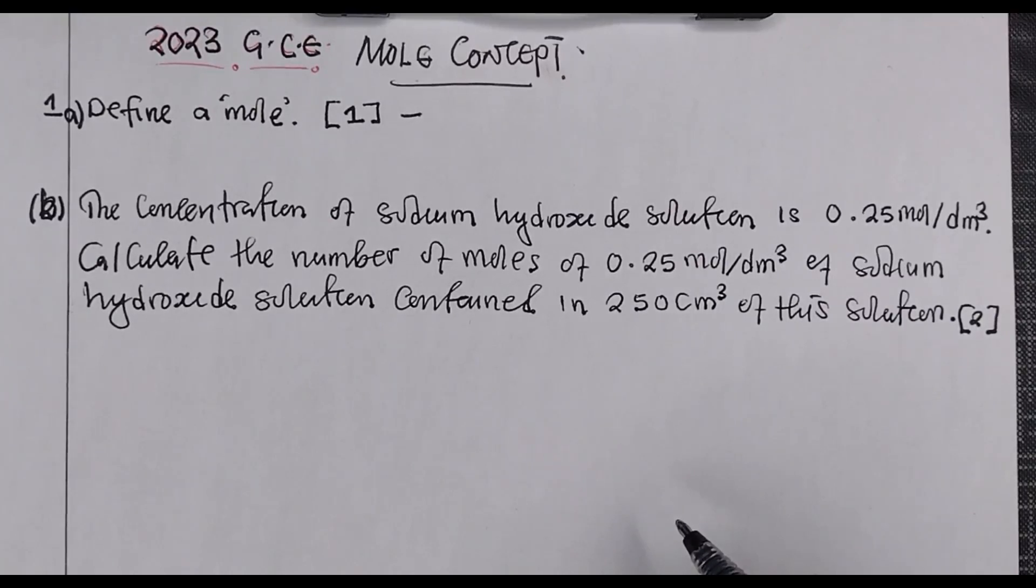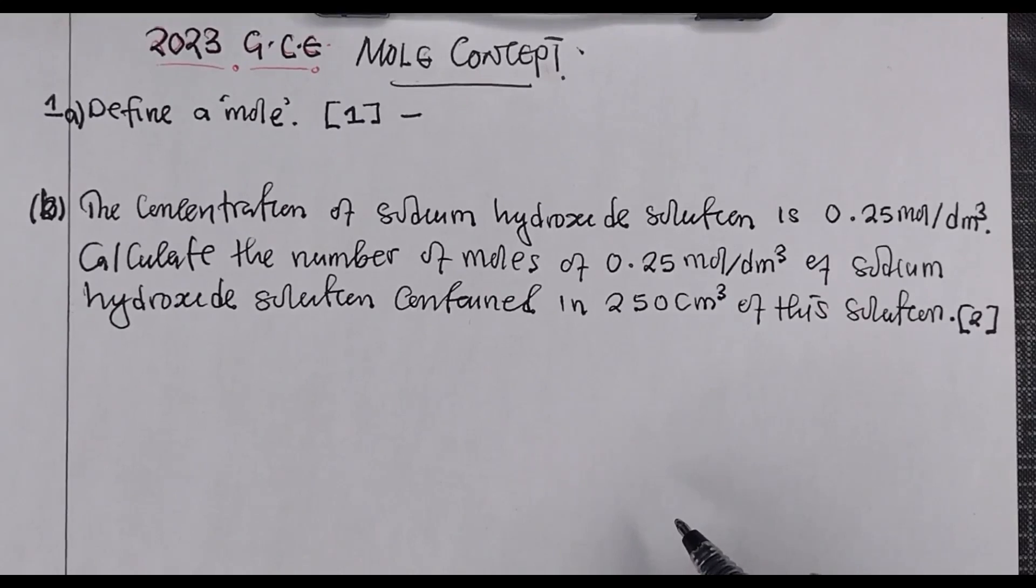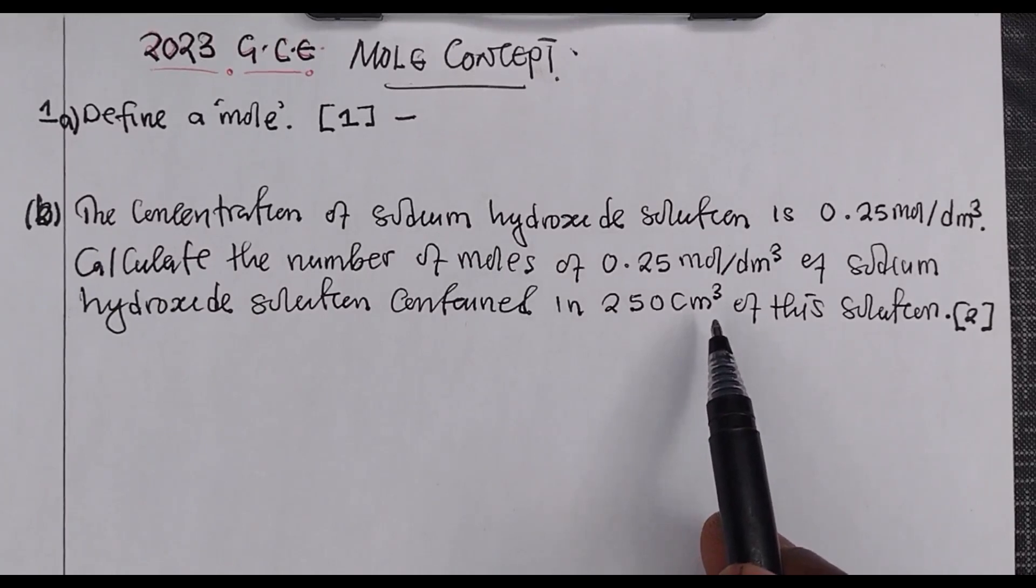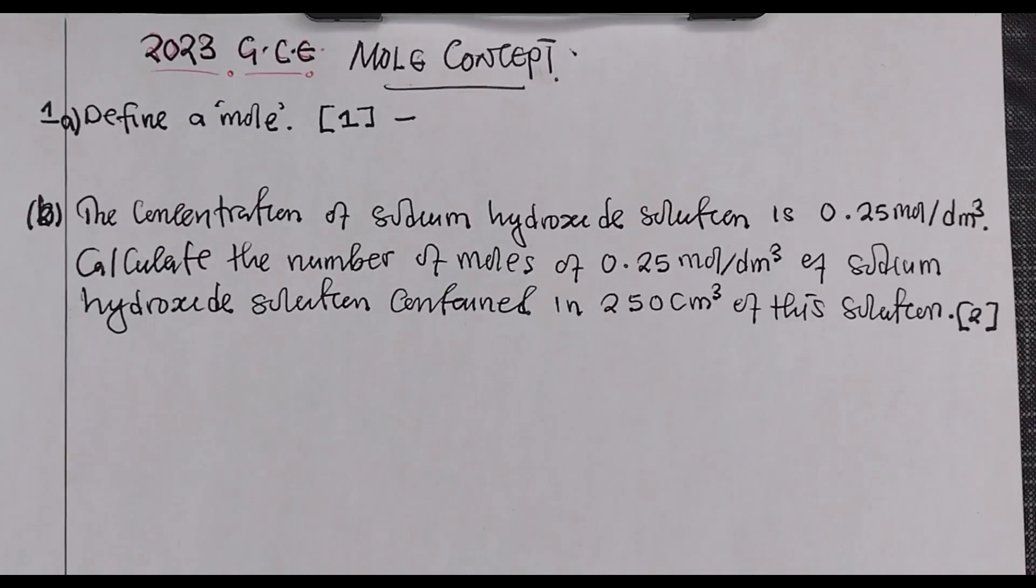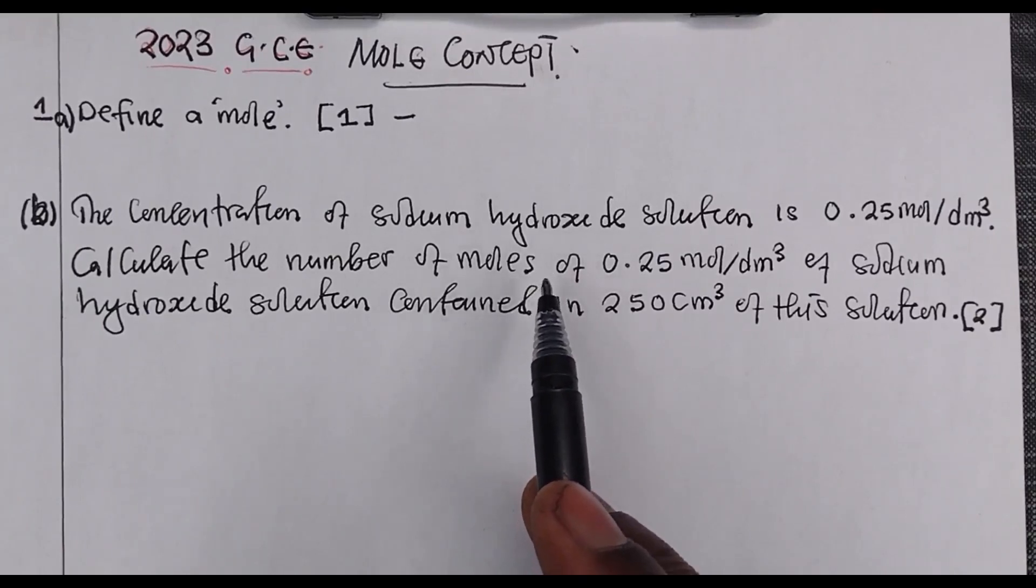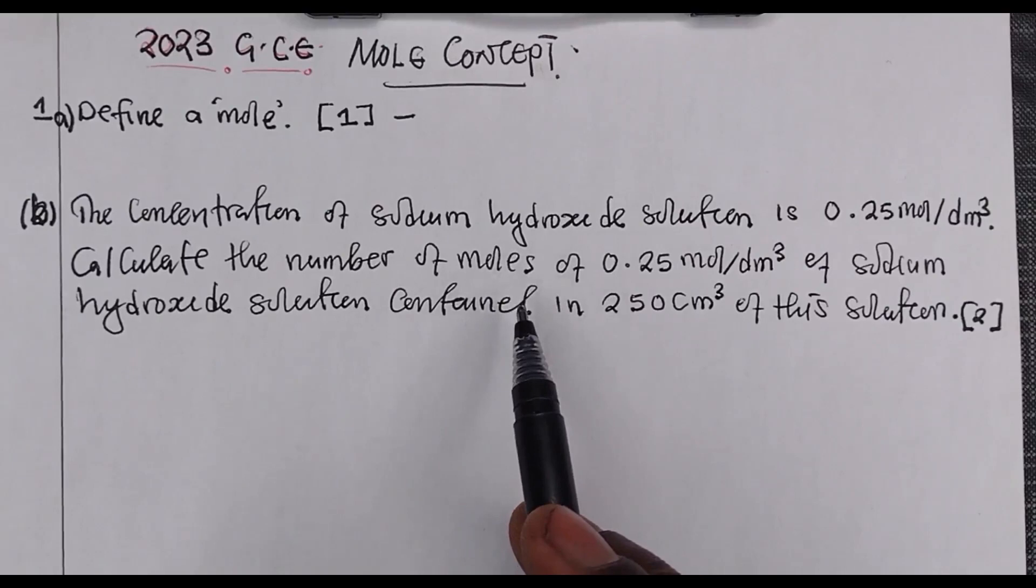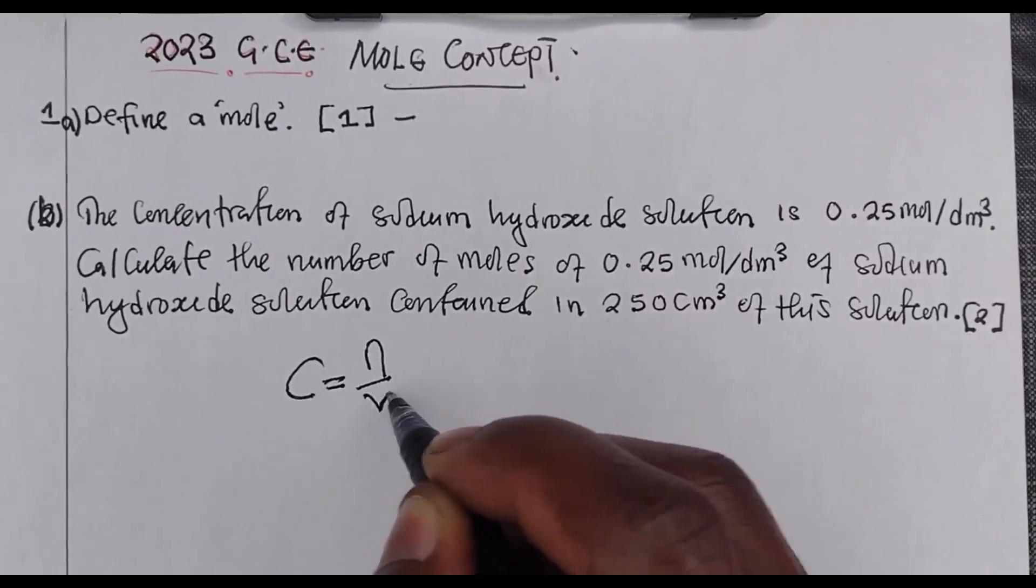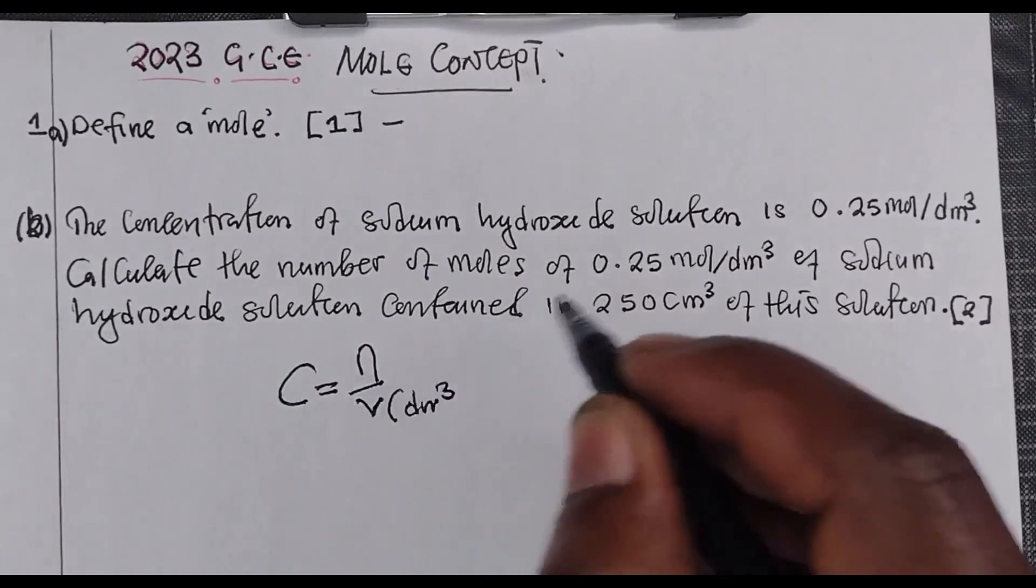The second question: The concentration of sodium hydroxide solution is 0.25 moles per decimeter cubed. Calculate the number of moles of 0.25 mol/dm³ sodium hydroxide solution contained in 250 cm³ of the solution. So we want to calculate concentration, and concentration we are saying number of moles divided by volume. The volume is supposed to be in decimeter cubed, and you find the number of moles.